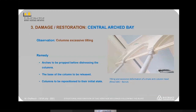Another less dangerous damage to the triple arch is excessive column tilting. The photos show that the pointed arches were simply supported on the columns, so any lateral load like the blast can shift them. The solution is to first prop the pointed arches, then distress the columns by removing the base manually and repositioning the columns to their initial position.